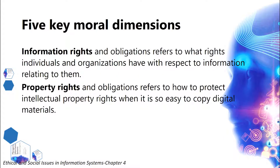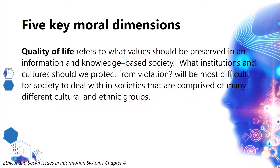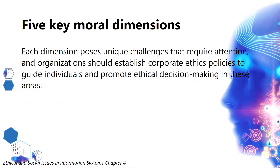Information rights and obligations refers to what rights individuals and organizations have with respect to information relating to them. Property rights and obligations refers to how to protect intellectual property rights when it is so easy to copy digital materials. Accountability and control refer to who will be held accountable and liable for the harm done to individual and collective information and property rights. System quality refers to what standards of data and system quality we should demand to protect individual rights and society's safety. Quality of life refers to what values should be preserved in an information and knowledge-based society — what institutions and cultures should we protect from violation? This will be most difficult in societies comprised of many different cultural and ethnic groups. Each dimension poses unique challenges, and organizations should establish corporate ethics policies to guide individuals and promote ethical decision-making.